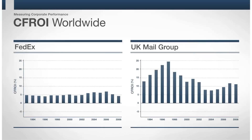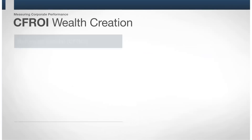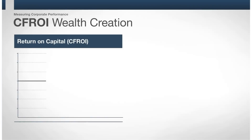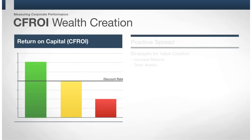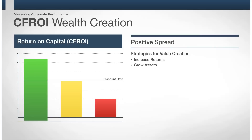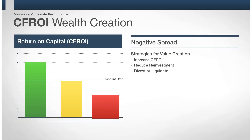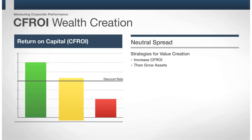To see whether a company is actually creating economic wealth, we need to compare the CFROI level to the company's cost of capital, which is also called the company's discount rate. Firms earning above their cost of capital create economic wealth, so they should strive to grow at high returns as fast as possible. Returns below the cost of capital destroy wealth. Firms in this position should focus on increasing their CFROI and reducing underperforming assets rather than on growth. When a firm's returns are equal to the cost of capital, management should focus on increasing CFROI, as incremental investment creates no value.